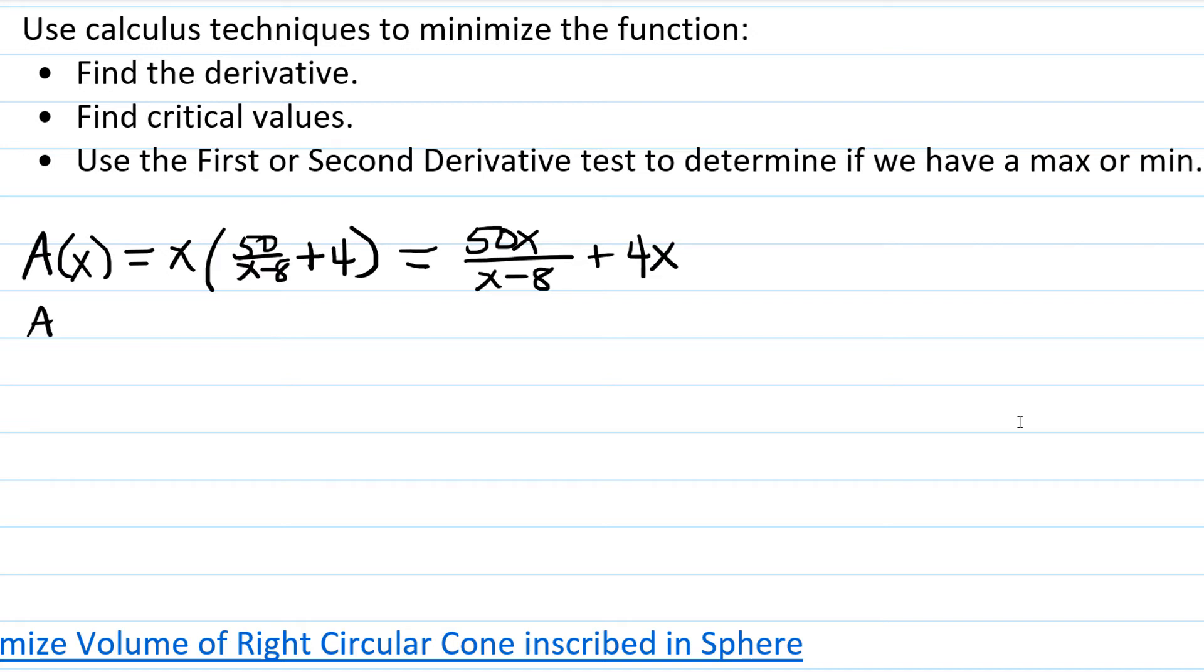I'm going to find A prime of X. First, I'm going to take the derivative of 50X over X minus 8 using the quotient rule. I'm going to have the bottom X minus 8 times the derivative of the top, which is 50, minus the top, which is 50X, times the derivative of the bottom, which is just 1, over the bottom squared. Plus, I need to take the derivative of the second term, the 4X, which is just 4. Let's simplify. 50X minus 50X is going to cancel out, and we're just going to be left with negative 400 over X minus 8 squared plus 4.